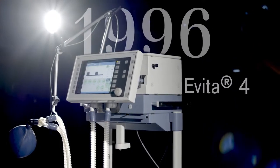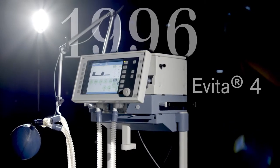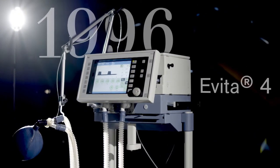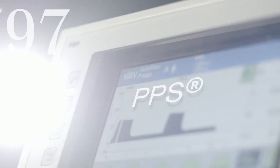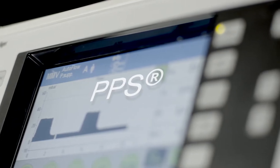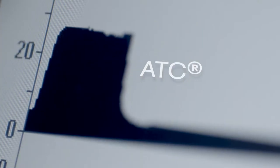Evita 4 made it possible to operate the device using a touch screen. This was a huge advancement at the time. One year later came proportional pressure support PPS and the automatic tube compensation ATC.